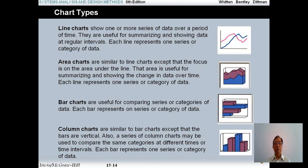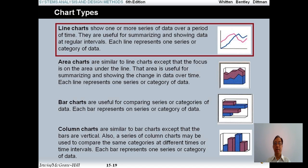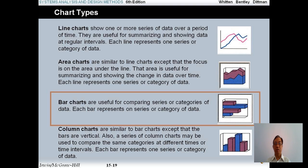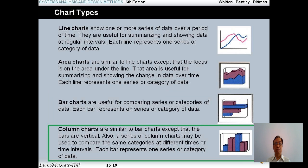Now let me go to chart types. As you study in Excel, we have many types and each type has a specific function. For example, when you use a line chart, you want to show one or more series of data over a period of time — they are useful for summarizing and showing data at regular intervals, and each line represents one series or category of data. In the picture you see two lines: a green line and a purple line. Bar charts are useful for comparing series or categories of data, and each bar represents one series or category. You also have the column chart.